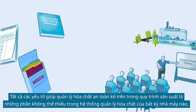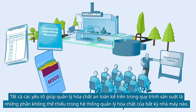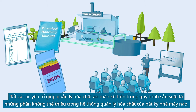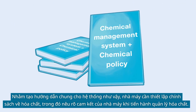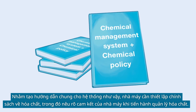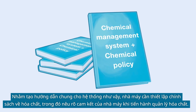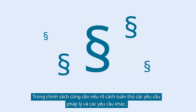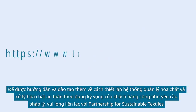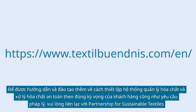All these elements for safely managing chemicals in your production form essential parts of the chemical management system of a factory. As an overall guidance for such a system, the factory should formulate a chemical policy that outlines the factory's commitment to chemical management. The policy should also specify how compliance with legal and other requirements is to be achieved. For further guidance and training on how to set up a chemical management system and safely handle chemicals in line with legal and customer expectations, contact the Partnership for Sustainable Textiles.